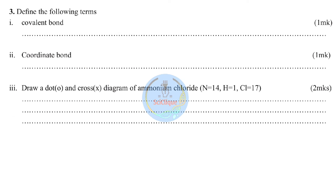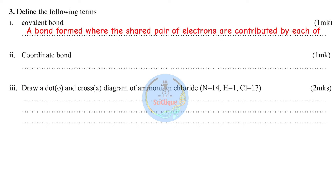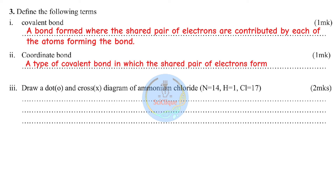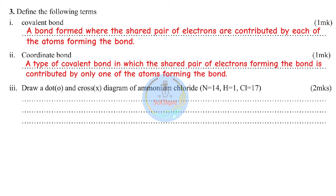Define the following terms. Covalent bond: a bond formed when the shared pair of electrons are contributed by each of the atoms forming the bond. Coordinate bond: a type of covalent bond in which the shared pair of electrons forming the bond is contributed by only one of the atoms forming the bond.